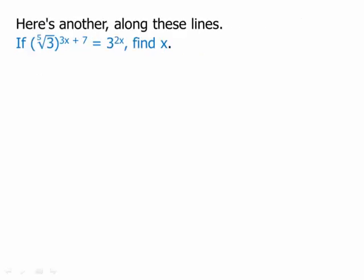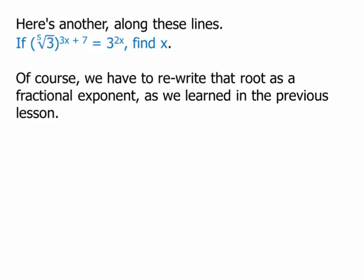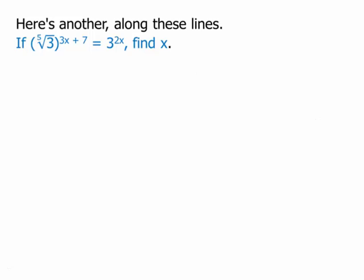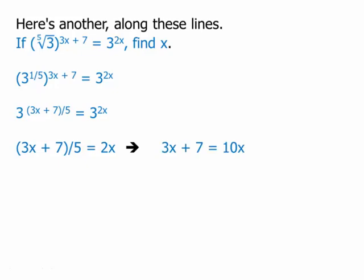Here's another along these lines. Pause the video and work on this. Of course, we have to rewrite that root as a fractional exponent, as we learned in the previous lesson. So the fifth root of 3, we have to rewrite that as 3 to the power of 1 fifth. Now we'll multiply the exponents. Now we have equal bases, so we'll just set the exponents equal, multiply by 5, and then just do ordinary algebra to solve.